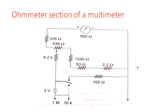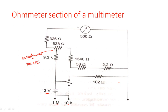The last section is the ohmmeter section of the multimeter. In the ohmmeter, a battery supply is required. Here, a 3-volt battery is used, with a 1 mega-ohm range and a 10 kilo-ohm range. In the ohmmeter, a potentiometer is used for zero adjustment. The purpose of this potentiometer is to obtain zero adjustment — when the unknown resistance is zero, we adjust the potentiometer to get zero deflection on the meter.